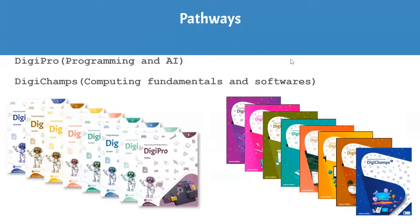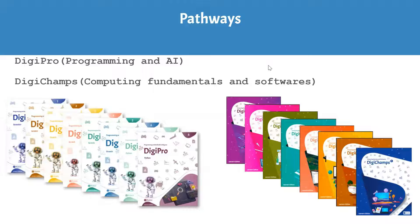Qubits has two pathways: DigiPro and DigiChamps. DigiPro is completely focused on programming and AI — we are the only one in the market with a dedicated series on programming and artificial intelligence, starting from grade one, with AI from grade three. We don't just teach theoretical concepts about AI; we ask students to implement and create machine learning models that can solve current problems, like a medical assistance model for COVID. This is all project-based learning.